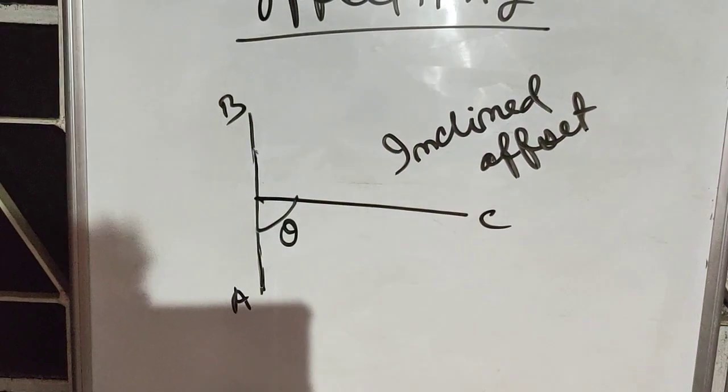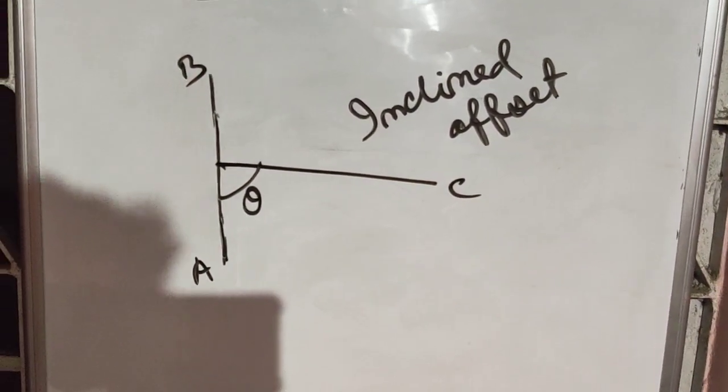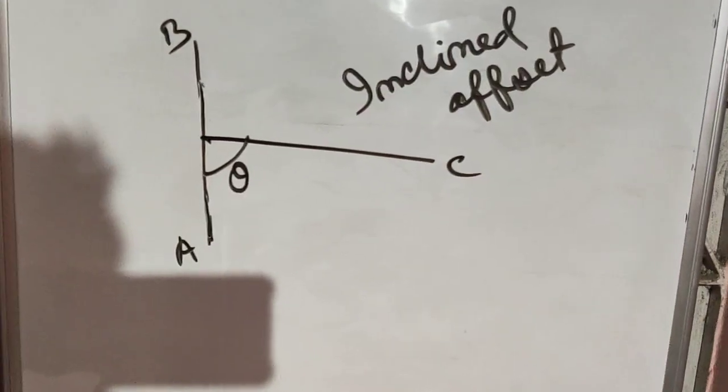So, if it is making an angle of 90 degree, the offset is called perpendicular offset, and if it is not making an angle of 90 degree, it is called inclined offset.